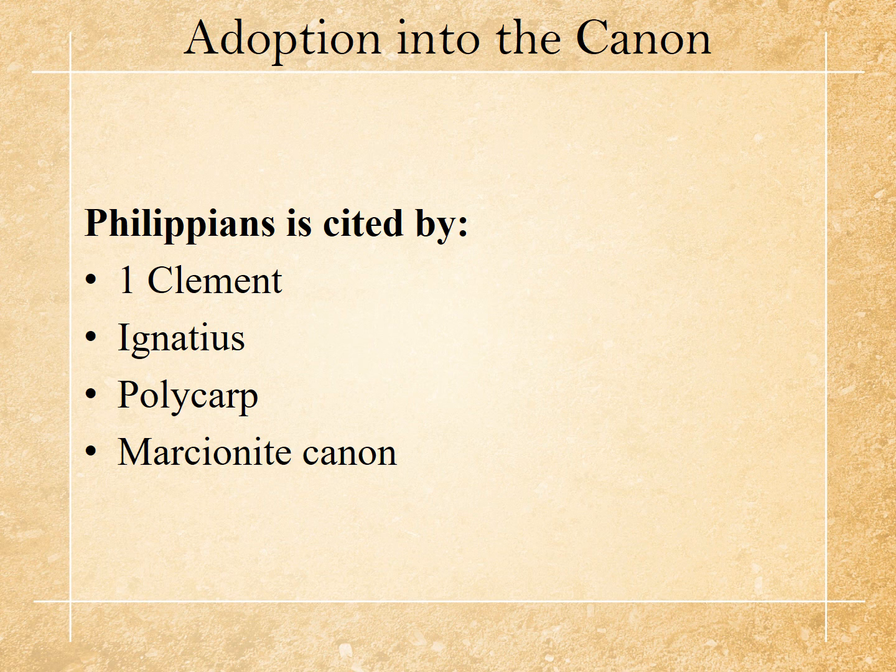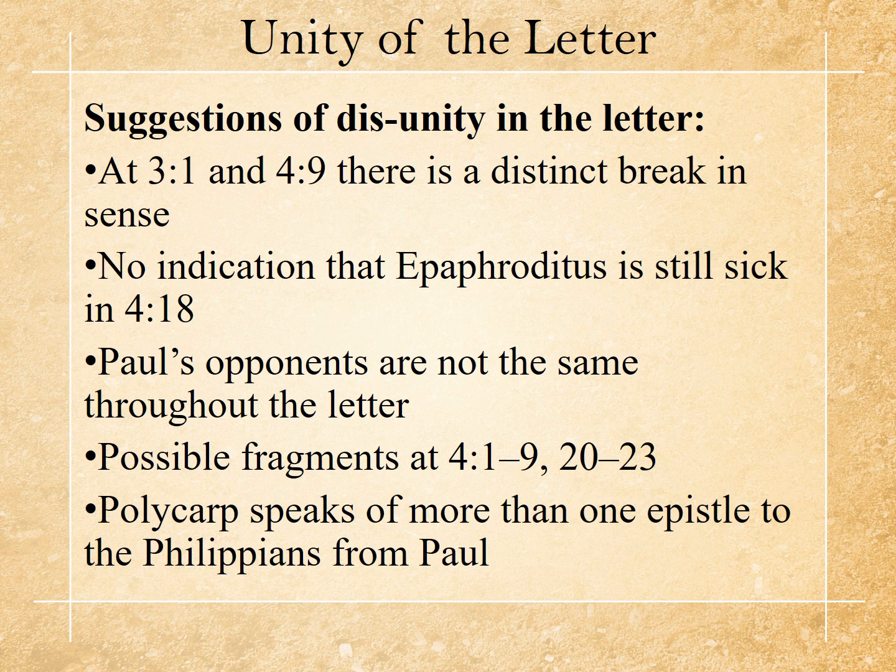The letter was adopted into the canon. It's cited by 1 Clement, Ignatius, Polycarp, and the Marcionite canon. Some would suggest that there's not unity in the letter — they want to see a break at 3:1 or maybe 4:9, saying there's a break in sense. They argue that there's no indication that Epaphroditus was sick in 4:18 because he doesn't say so. Paul's opponents are not the same throughout the letter, which they think strengthens their theory that this letter is disunified. There are possible fragments at 4:1-9 and 20-23, and Polycarp speaks of more than one epistle to the Philippians from Paul.